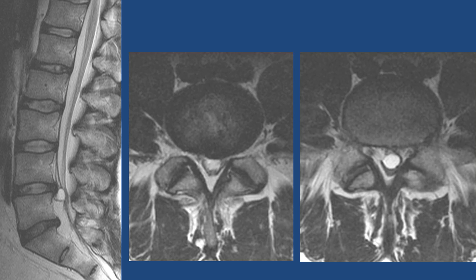In this proven discal cyst example, you can see disc herniation at this level, and below it is a lesion that raises the question of whether it's a small disc protrusion with some other abnormality — perhaps a cystic tumor. However, this is actually a discal cyst; the two are connected. You can see how bright it is on the T2-weighted image and its effect on the thecal sac with the roots visible in the subarachnoid space. That's a quick rundown of the terminology commonly used in reporting degenerative disc disease.